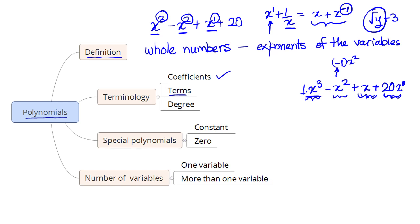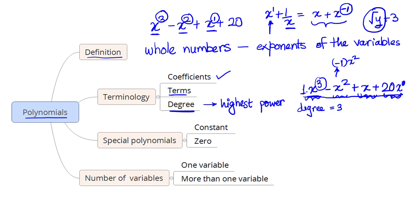The third important term is degree. The degree is simply the highest power of the exponent in the polynomial. For x³ - x² + x + 20, the degree is 3 because the highest power of x is 3. Similarly, for x²⁰ + x³⁰, the degree is 30 because x is raised to the highest power of 30.